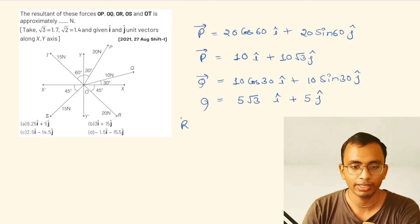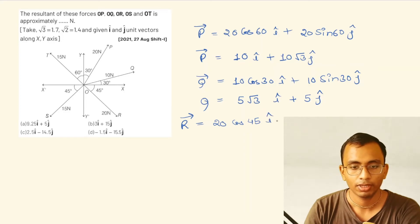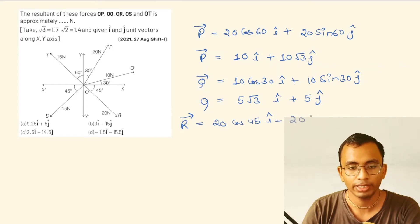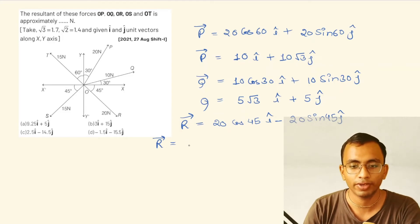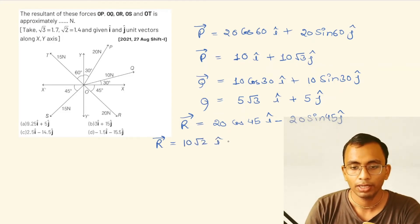Now we will write vector R. R equals 20 cos 45° î, and in the y-axis it is going in the downward direction, so minus 20 sin 45° ĵ. Since cos 45° and sin 45° are 1/√2, vector R becomes 10√2 î - 10√2 ĵ.